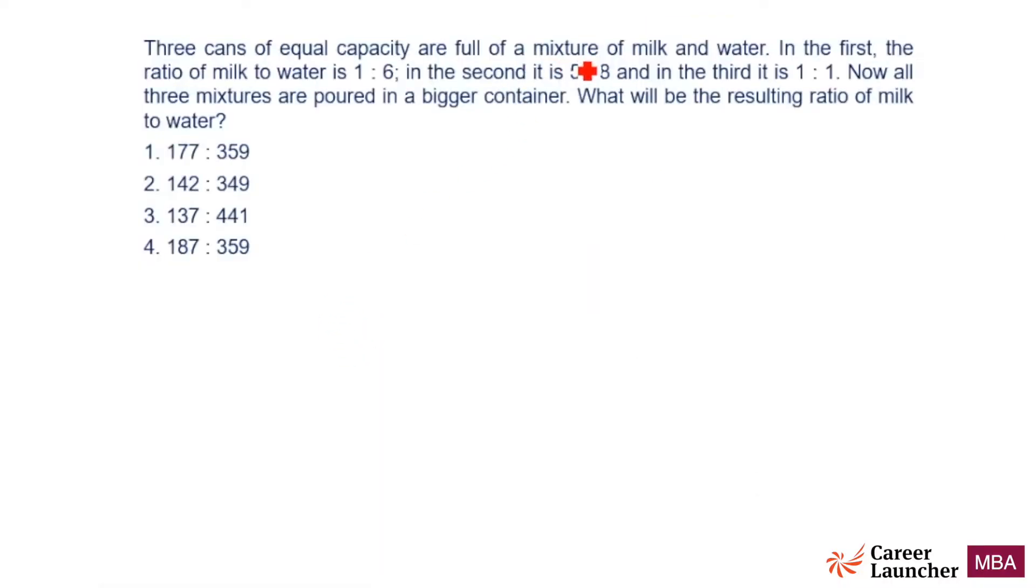Three cans of equal capacity are full of a mixture of milk and water. In the first, the ratio of milk to water is 1 is to 6. Second is 5 is to 8. Third is 1 is to 1. All three mixtures are poured in a bigger container. What is the resulting mixture of milk to water?